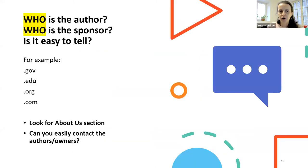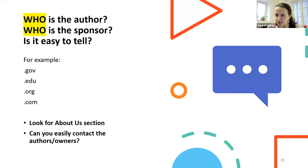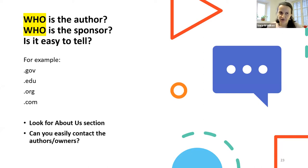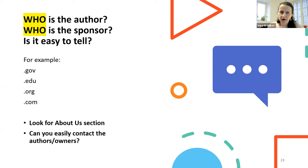First is the 'who.' Who is the author? Who is the sponsor of the website? Who is behind this information, and is it easy to tell? If you can't find who the author is easily, that could already be a red flag, because a reliable website will be very transparent about who they are, what their credentials are, and sometimes even their editorial process — usually found in the 'About Us' section. Also ask: is there a way to contact the authors? If you don't know who they are and there's no way to contact them, that could be a potential red flag.